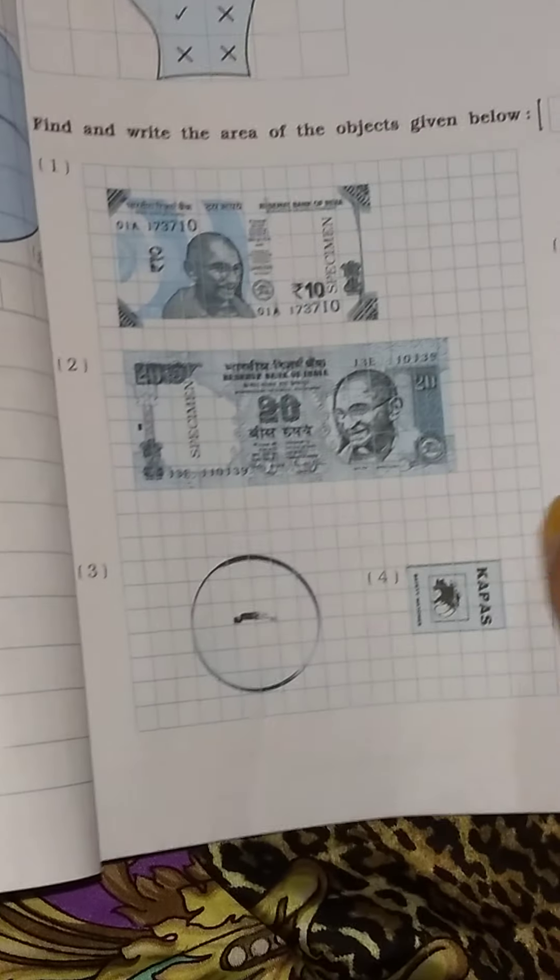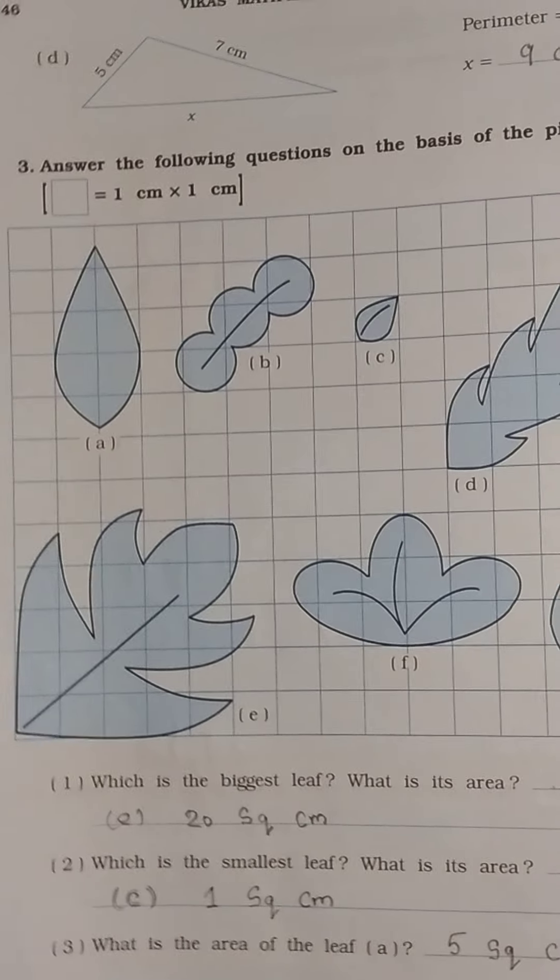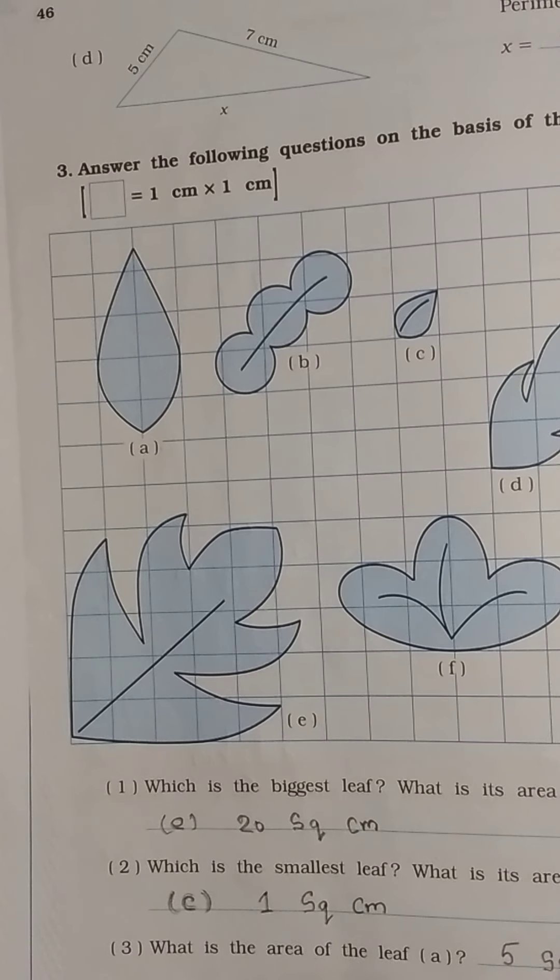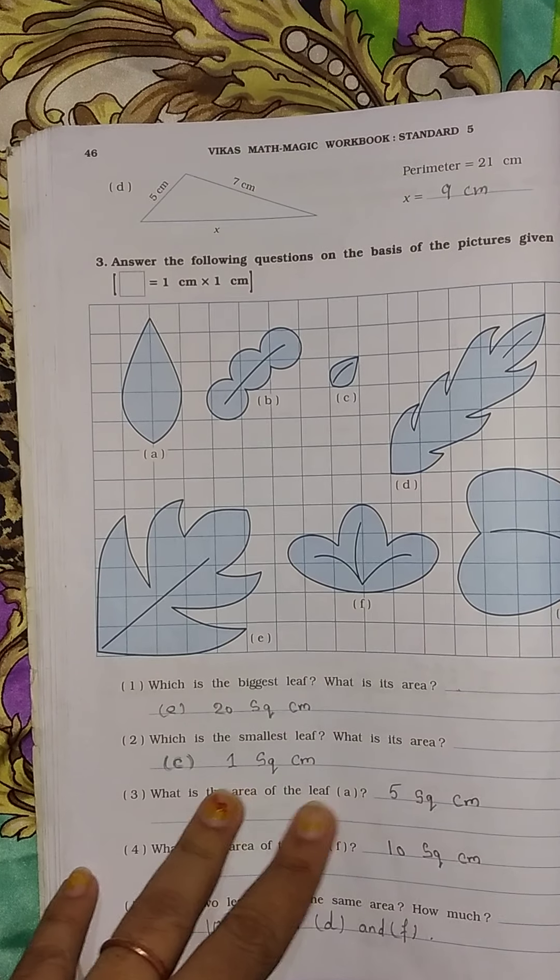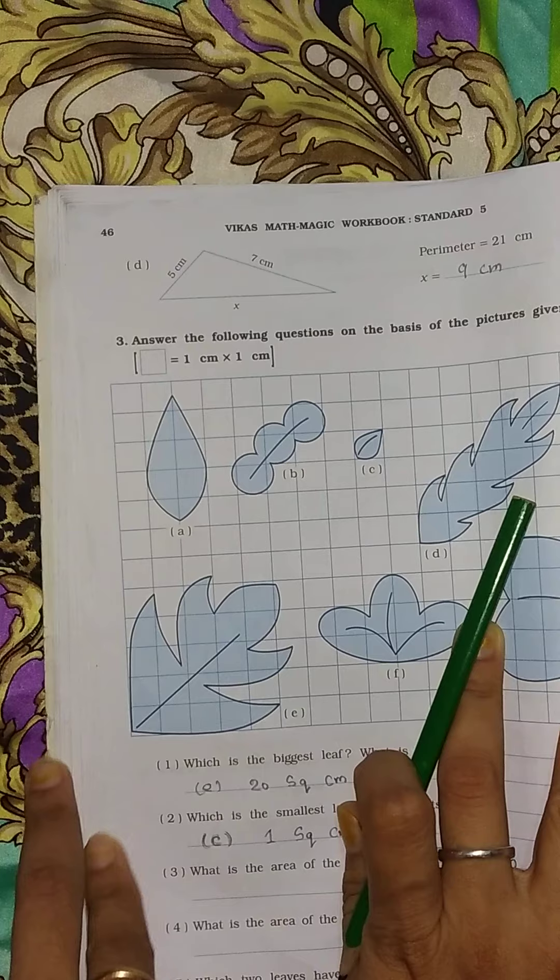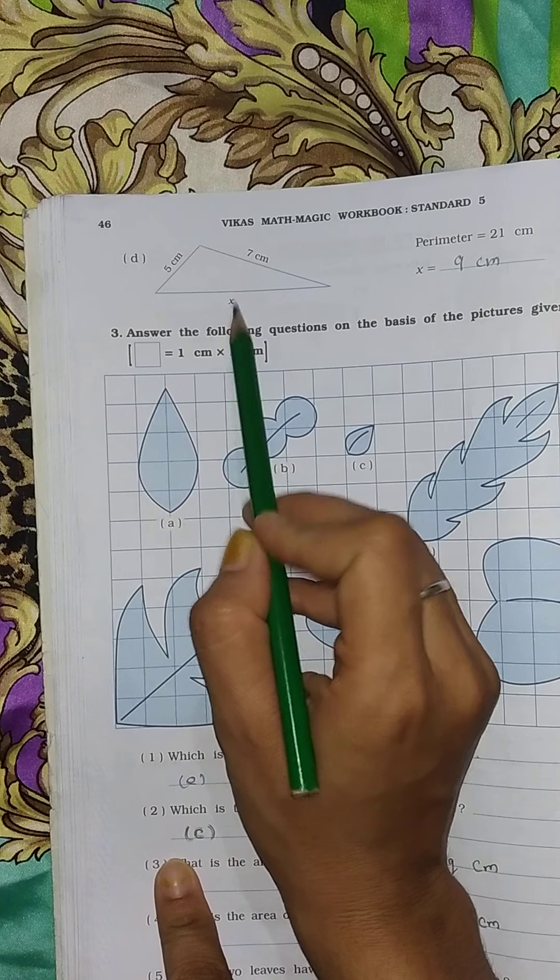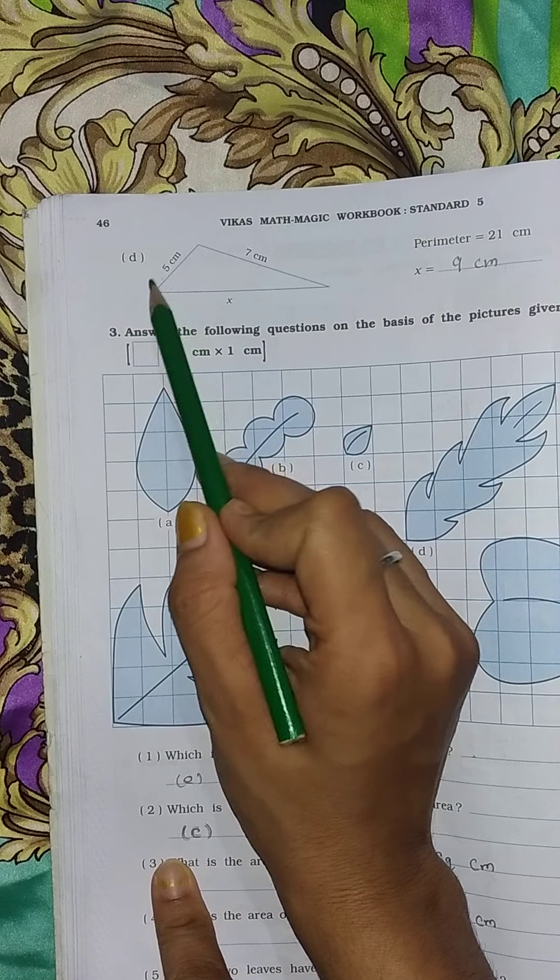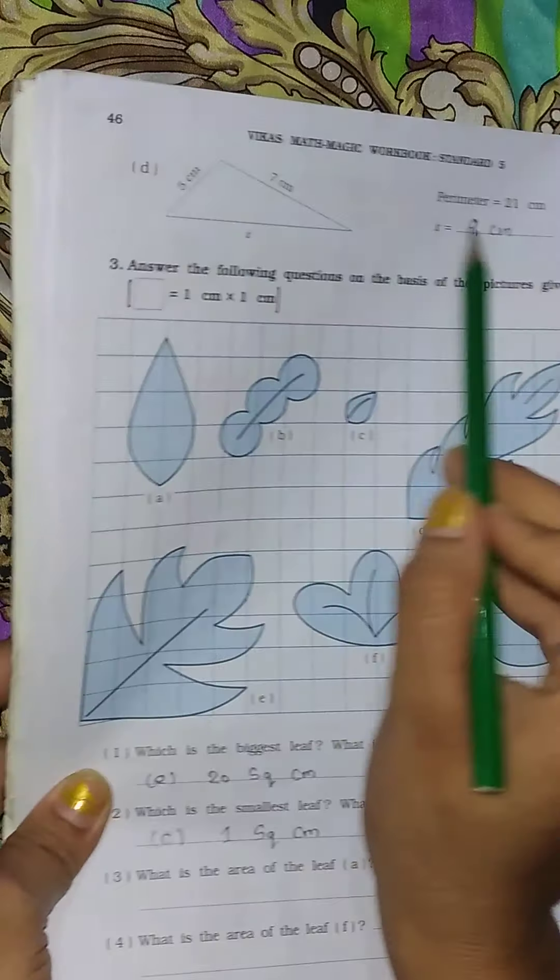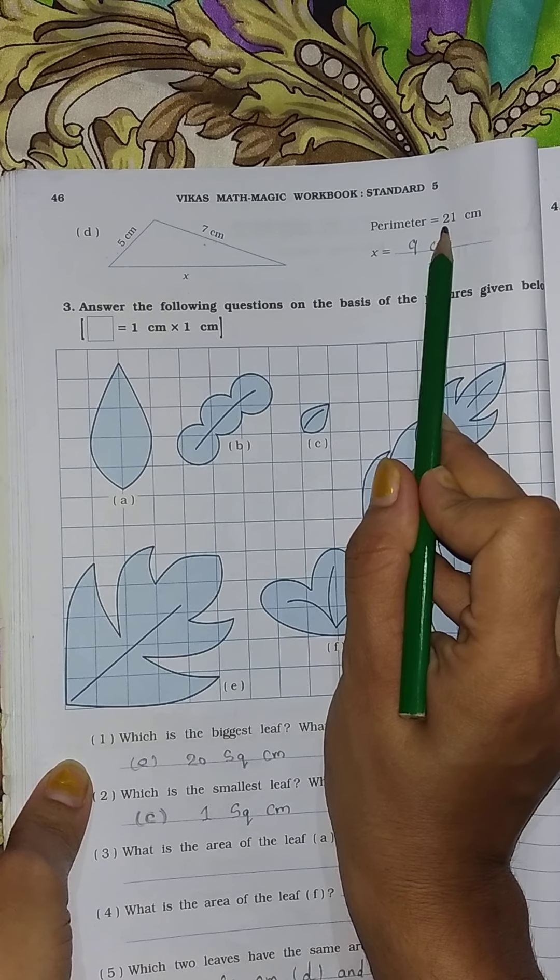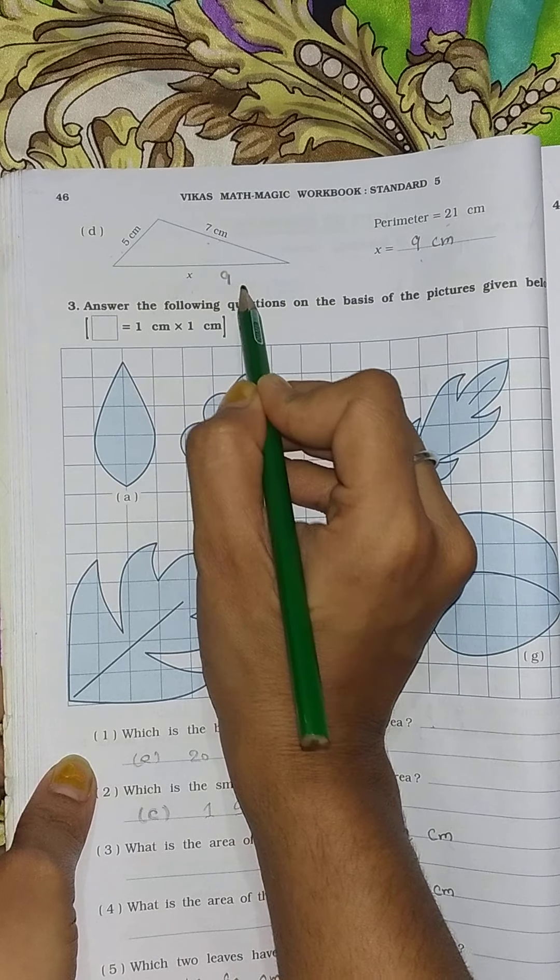Now turn your page and come to page number 46. You can see here, measurements are given. See this one. The x value you have to find out. 5 and 7, 5 plus 7, how much? 12. 21 minus 12 is 9. So this is 9 cm. This is the measurement.